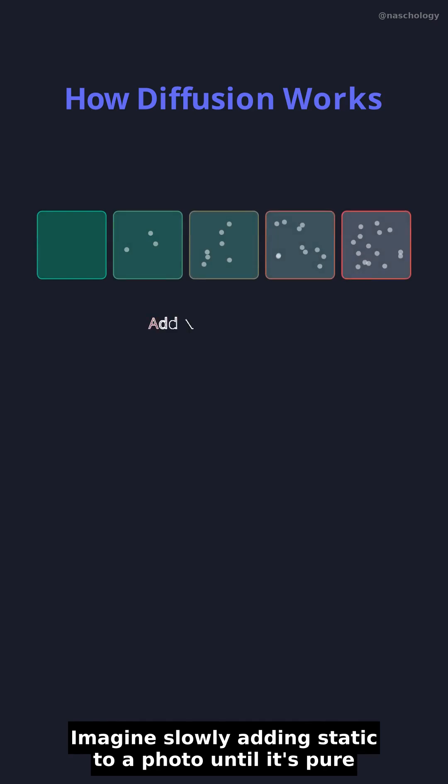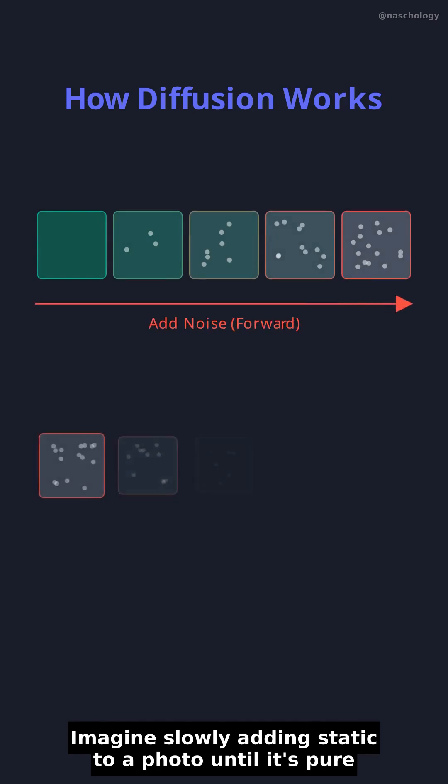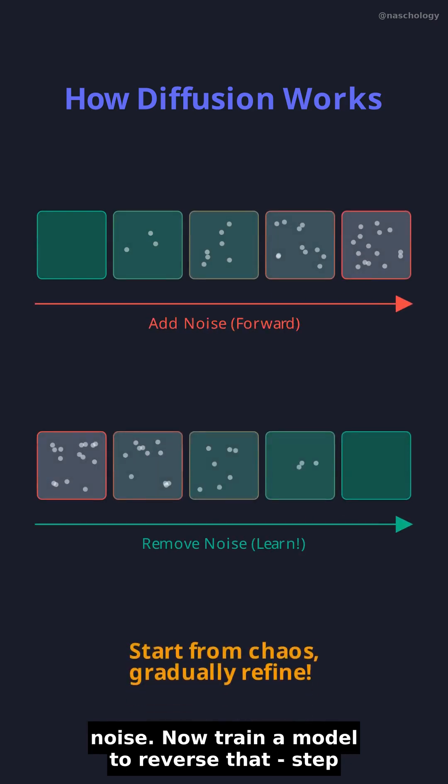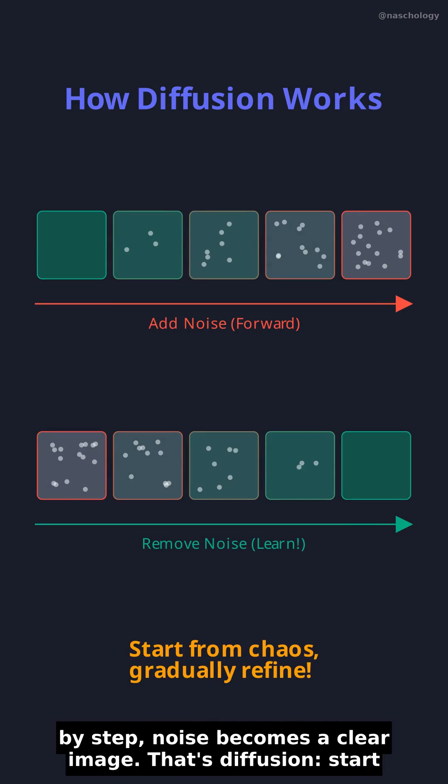Imagine slowly adding static to a photo until it's pure noise. Now train a model to reverse that — step-by-step, noise becomes a clear image. That's diffusion.